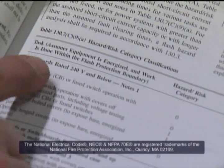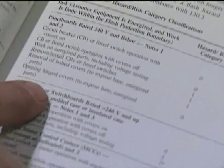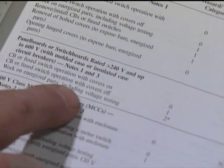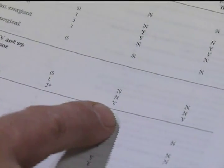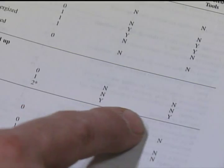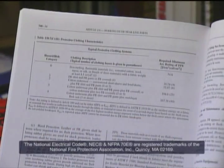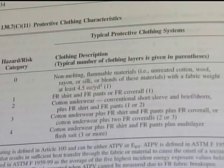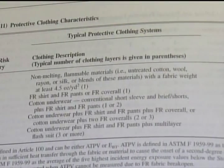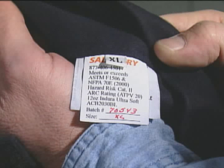If a detailed hazard analysis has not been completed, or there are no labels on the equipment, there are tables found in NFPA 70E based on specific parameters that will help the worker select the proper personal protective equipment. All clothing, including undergarments, must be of natural fiber. Never wear clothing made from synthetic materials or blends with material like polyester or nylon unless it has been properly treated and tested. An ATPV rating, or arc thermal performance value, is used to determine the ability of a garment to withstand various arc flash intensities.